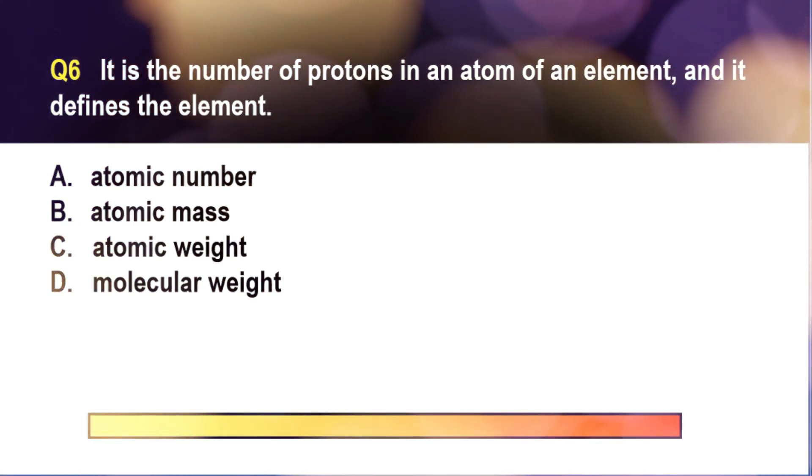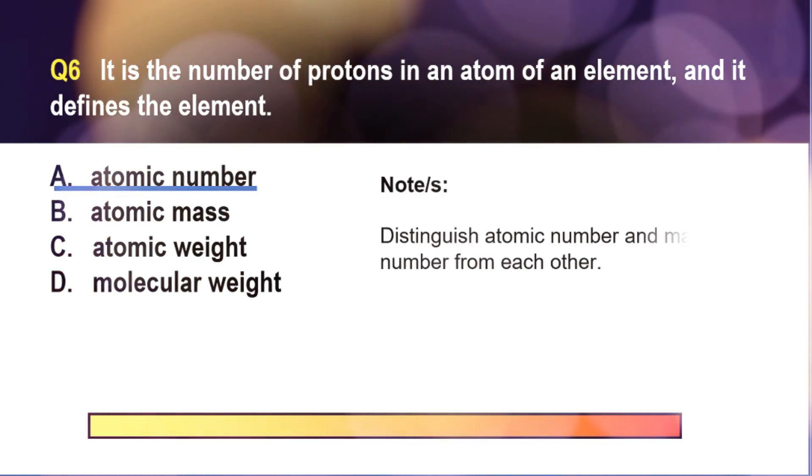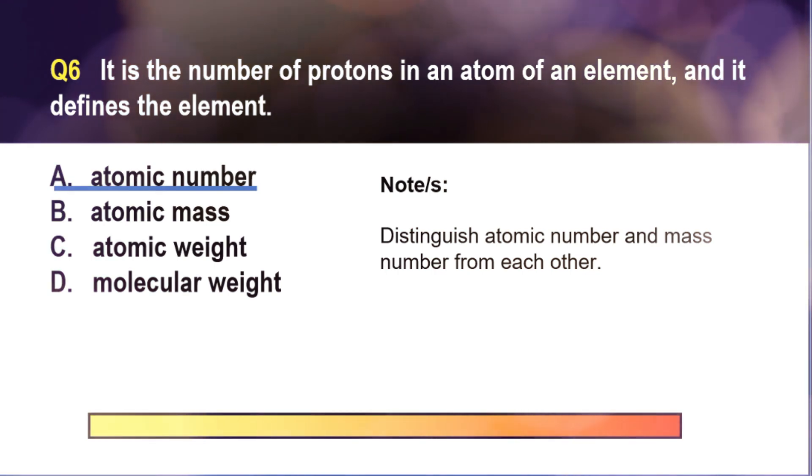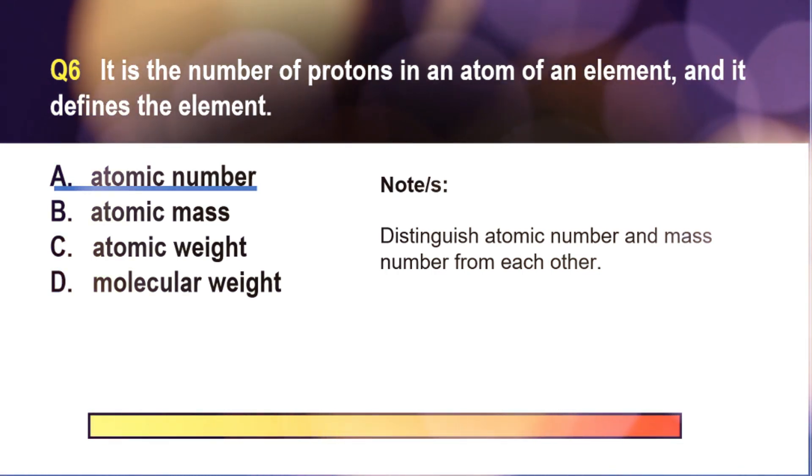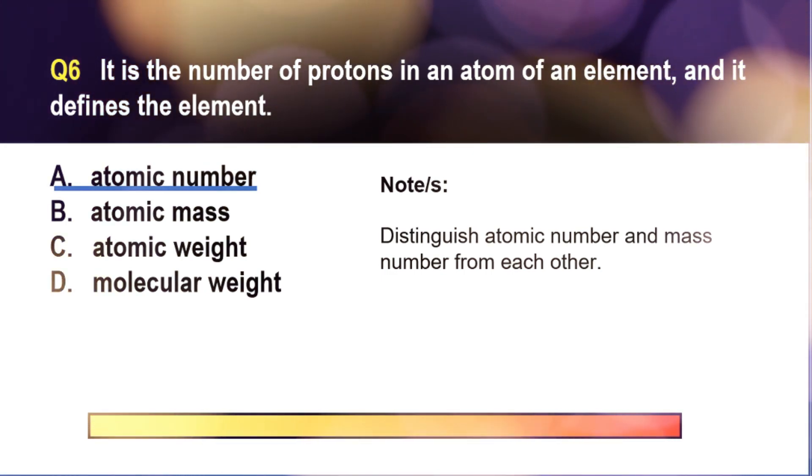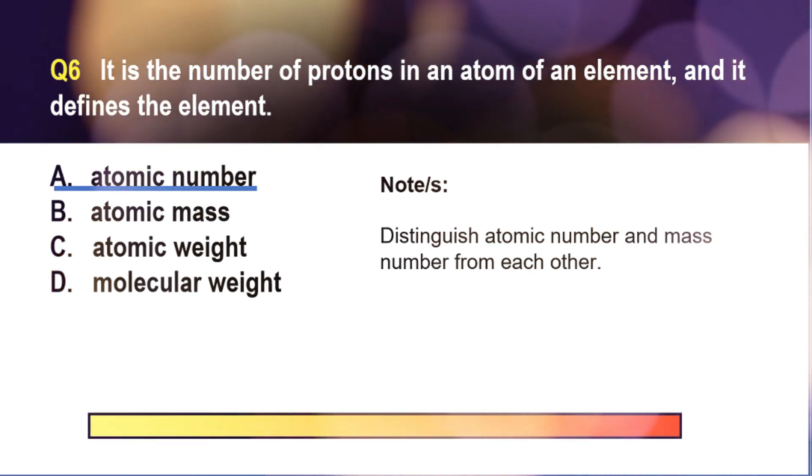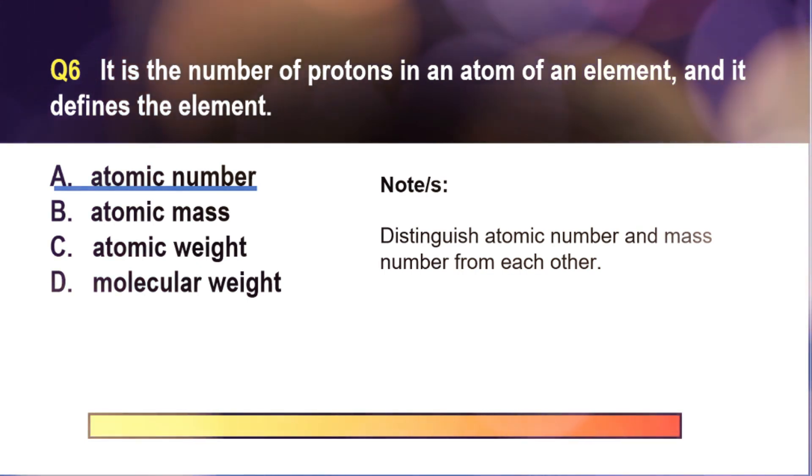The correct answer is letter A. This is basic. You should know by now that when you say atomic number, it refers to the number of protons in the atom. For instance, oxygen has an atomic number of 12. This means oxygen has 12 protons. And the atomic number is very important because it is unique for atoms of a given element. It's like your student number in school.